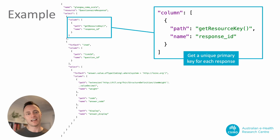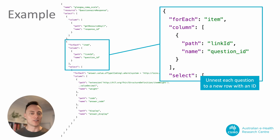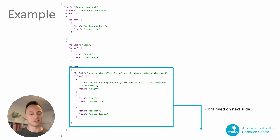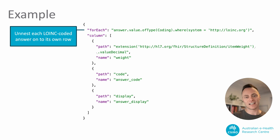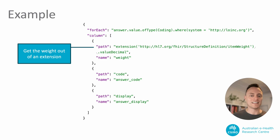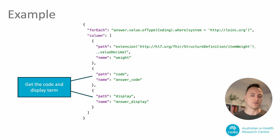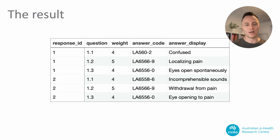Here is an example where we have a questionnaire for calculating the Glasgow Coma Scale, and a view that takes responses to the questions and puts them in a simple table. First, we use the getResourceKey function to put the response ID in the first column. There are multiple questions in the questionnaire, and here we are deciding to put the response to each question on its own row. Here we select each answer that contains a LOINC coded response. Within each answer, we have a weight value that is stored in a FHIR extension — the extension function makes easy work of this. Then we finish off the view with two more columns containing the code and display term for each answer. This is the resulting table: five columns containing simple values that can be dealt with easily using generic analytic tools, with multiple questions for each response, each on its own row.